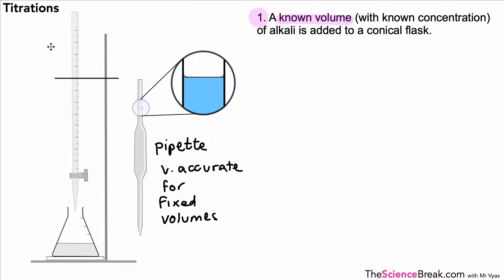Commonly it's 25 centimeters cubed, but there are pipettes for other volumes as well. So we use that to measure out our alkali to put in our conical flask. We would measure the volume at eye level to make sure that we got an accurate reading and we didn't get an error in our reading.